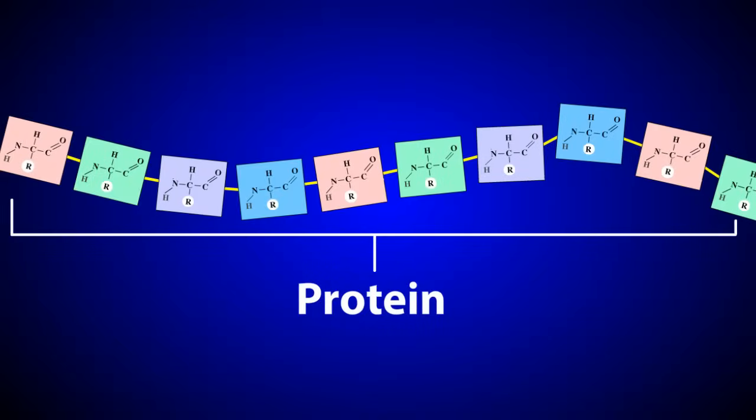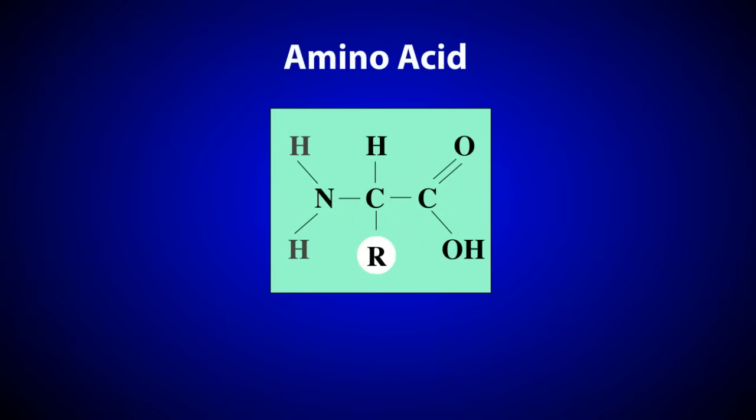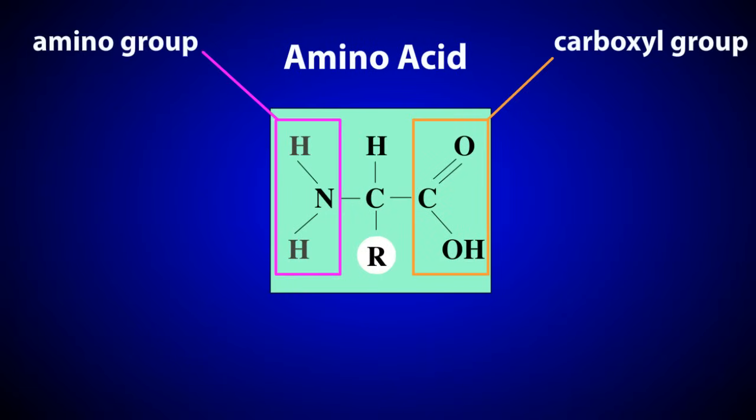Proteins are made from long chains of amino acids. Amino acids all have a similar structure with carboxyl and amino functional groups. What makes each amino acid unique is the presence of a variable or R group. The R group gives each amino acid its chemical properties.